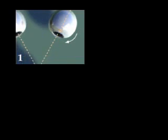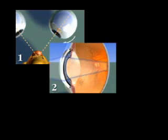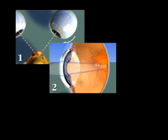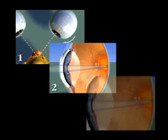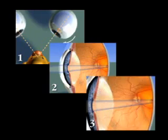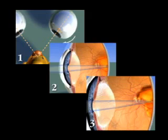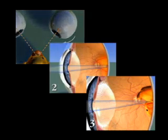Combined, convergence, pupil constriction, and lens accommodation all function to keep an object in focus as it approaches the eye.